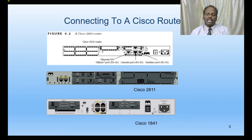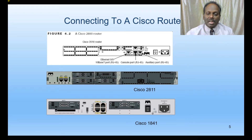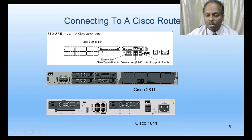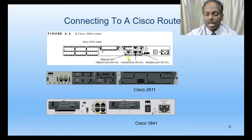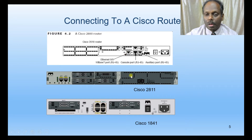For CCNA we need to learn about the 1841 or 2811 routers. Looking at the rear panel, you have the power control with an on/off switch and various ports. The yellow one is the console port, used for first-time configuration. It looks exactly like RJ45 but it is a serial port.